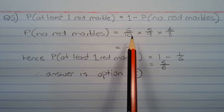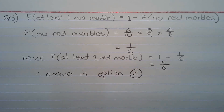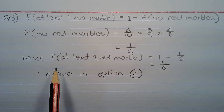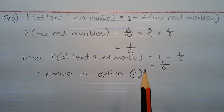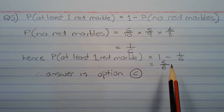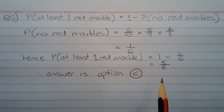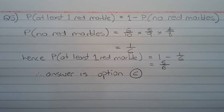And this equals 1 over 6. Hence the probability of selecting at least one red marble equals 1 minus 1 over 6, which equals 5 over 6. Therefore the answer is option C.